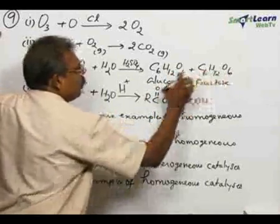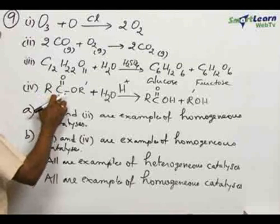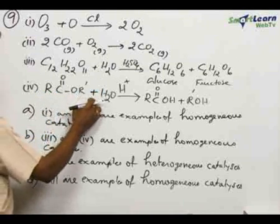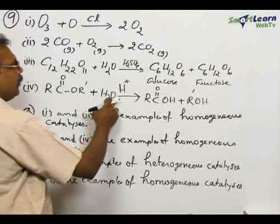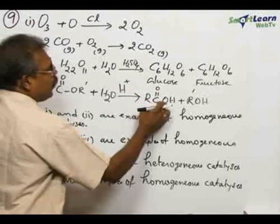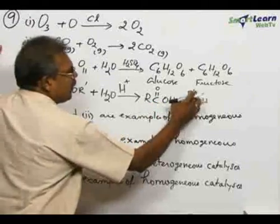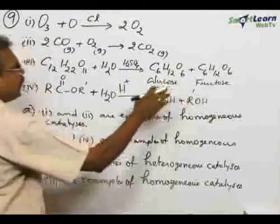Reaction 4: an ester RCOOR' plus H2O, hydrolysis of ester in presence of strong mineral acid H+ gives RCOOH, the acid, plus R'OH, the alcohol as products.